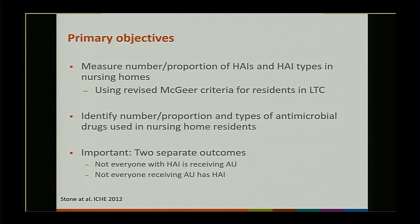The primary objectives of our prevalence survey were to measure the number and proportion of HAIs and the different HAI types that occur within nursing home settings. We used the revised McGeer criteria for residents in long-term care — which you should be familiar with at least from the UTI definition in NHSN, which is based on that revised McGeer criteria. The other objective is to identify the number, proportion, and types of antimicrobial drugs being used in nursing home residents. These are two separate outcomes.